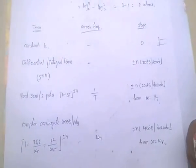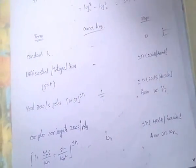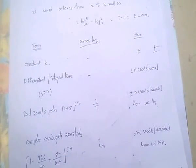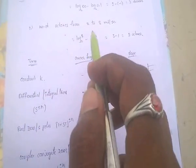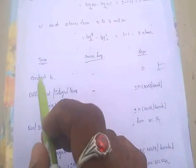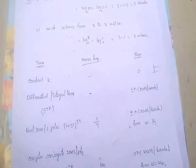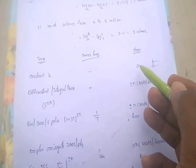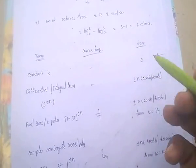Coming to the table for Bode plot. This is an important table showing how to find corner frequencies and slope of the Bode plot. For the constant term: if G(s)H(s) is in the form of k divided by s into (1+sT1)(1+sT2), the constant k term has no corner frequency, and the slope for this constant is 0 dB per decade.